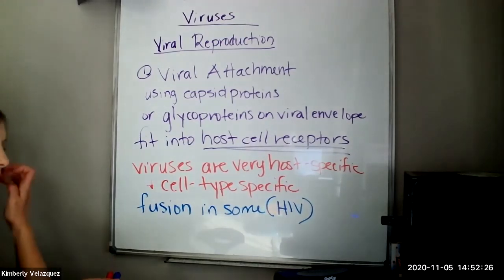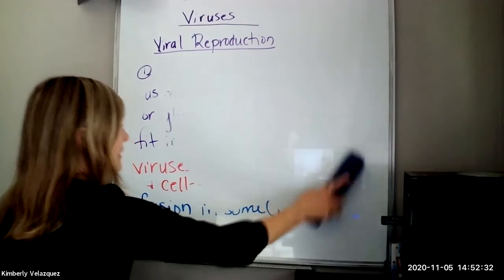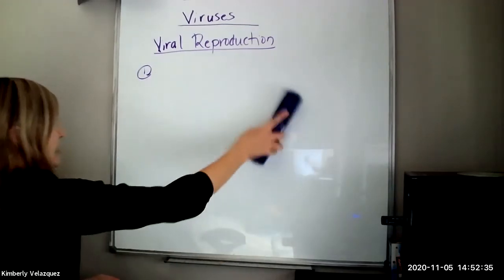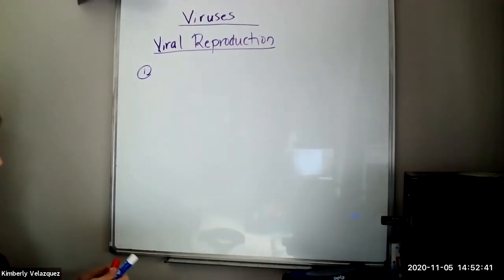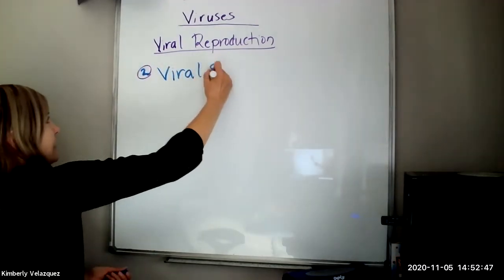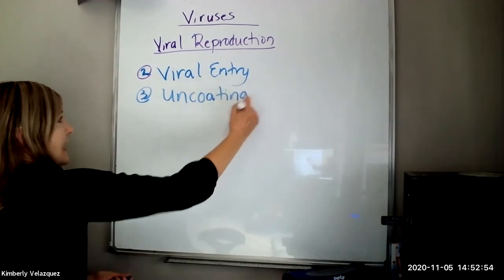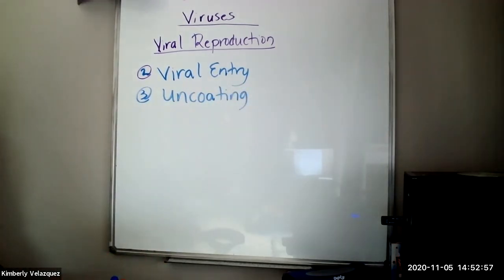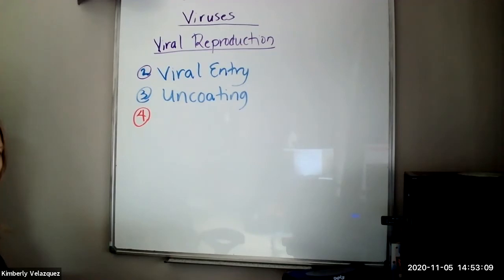Now that virus is going to gain entry into the cell. It can gain entry in a number of ways. It can get entry through endocytosis or just based on the fact that it has connected to the receptor. It is allowed entry. It can inject just its genome and its enzymes. But either way, we have step two, which is viral entry. And sometimes uncoating is necessary if the entire virus entered. And that means removing that capsid on the outside of the virus. And now the viral enzymes and the viral genome are in the host cell and it's ready to start doing its thing.